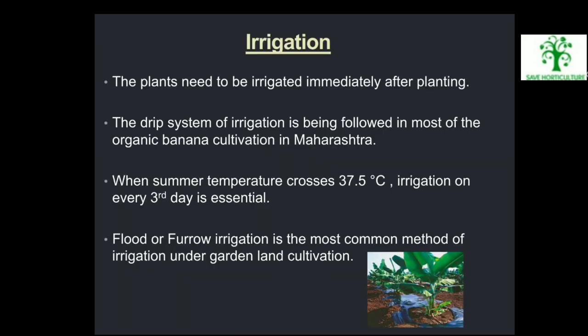Irrigation: The plants need to be irrigated immediately after planting. The drip system of irrigation is being followed in most of the organic banana cultivation in Maharashtra. When summer temperature crosses 37.5°C, irrigation every third day is essential. Flood or furrow irrigation is the most common method of irrigation under garden land cultivation.